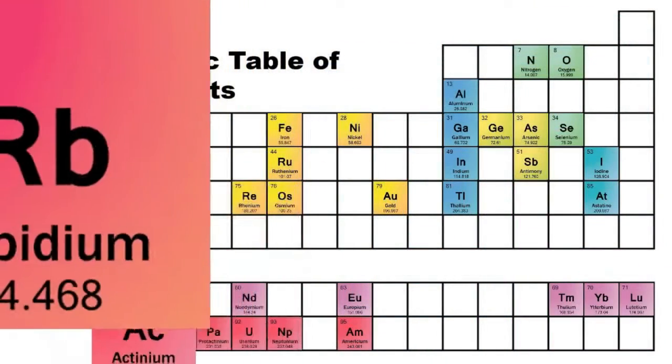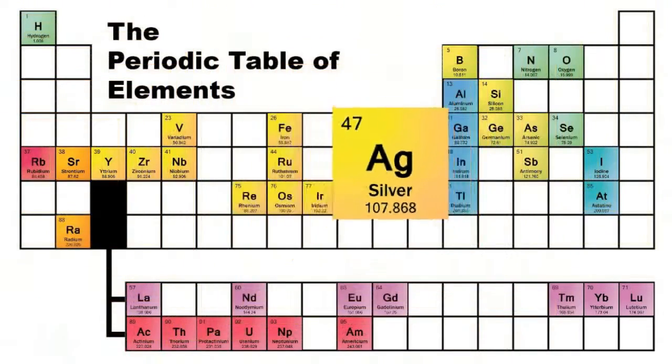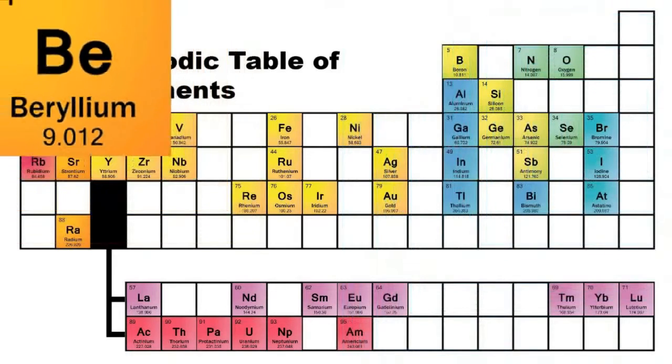There's yttrium, ytterbium, actinium, rubidium, and boron, gadolinium, niobium, iridium, and strontium, and silicon, and silver, and samarium, and bismuth, bromine, lithium, beryllium, and barium.